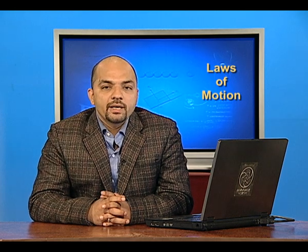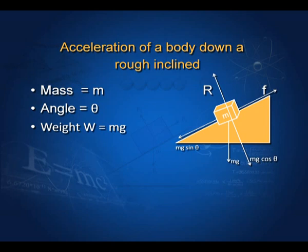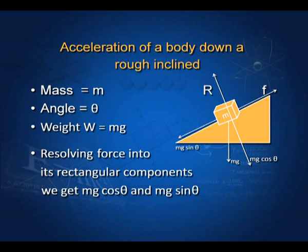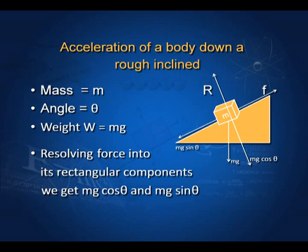Acceleration of a body down an inclined plane. Let a body of mass m be kept on an inclined plane at angle θ. Weight W = mg acts towards the center of the earth, perpendicular to the ground. Resolving into rectangular components, we get mg cosθ perpendicular to the plane and mg sinθ parallel to the plane. Due to mg sinθ, the body tends to slide down, so friction acts upward. The normal reaction R = mg cosθ.